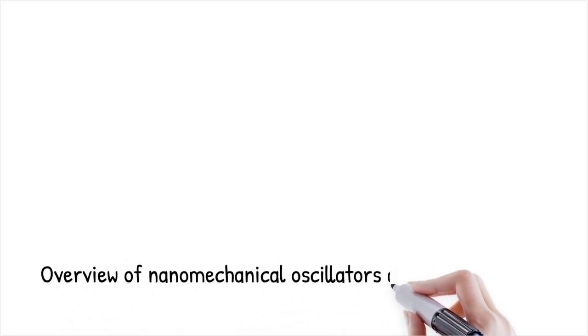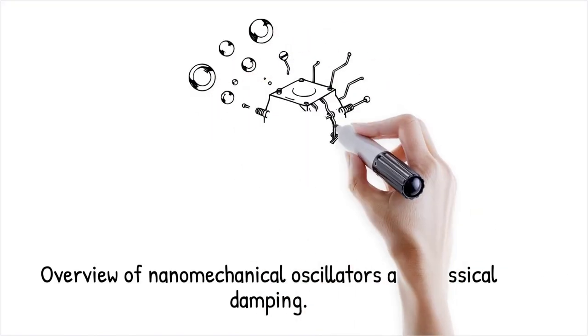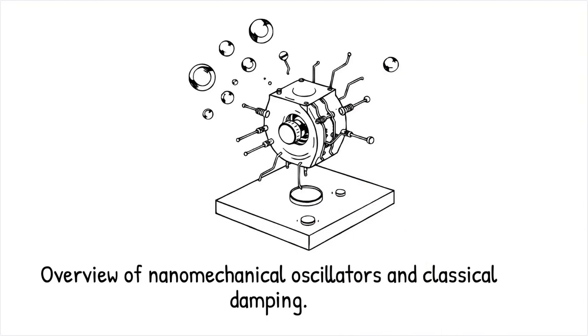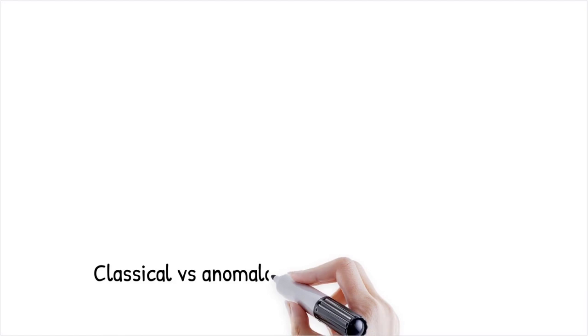Nanomechanical oscillators are tiny vibrating structures used in precision sensing, quantum information, and advanced metrology. In classical mechanics, damping arises from energy dissipation through air resistance, internal friction, or substrate interactions, leading to predictable oscillation decay.